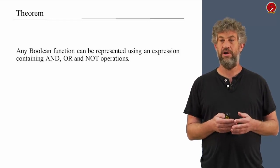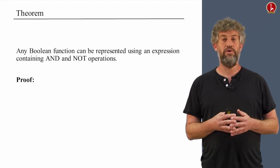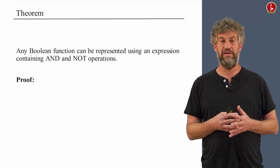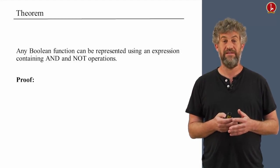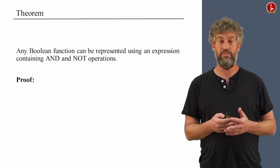But do we really need all of them? Well, here's a better theorem, if you wish. We don't really need OR gates. Just with ANDs and NOTs, we can construct any Boolean function. How can we prove that? Well, we already know that if we have ORs, we can do everything. We've just seen that.